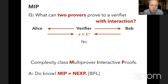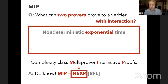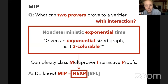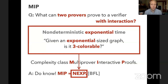Due to work by Babai, Fortnow, and Lund in the early 90s, we have a precise characterization of the power of this class: MIP equals NEXP. NEXP is non-deterministic exponential time — the exponential-time analog of NP, where the verifier can run in exponential time. A canonical problem in NEXP is: given an exponentially-sized graph, is it three-colorable?